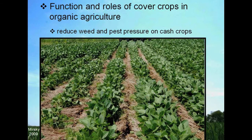This is what the system looks like: an organic soybean system in which rye was grown to very high biomass levels and then no-till drilled through that mulch layer. You can see it's fairly effective weed control.